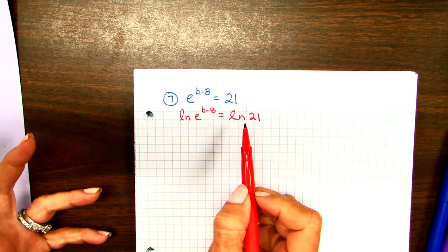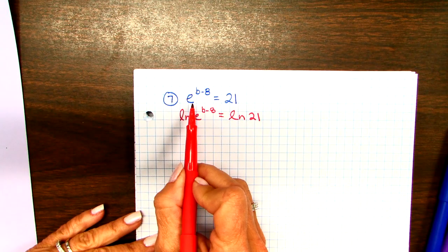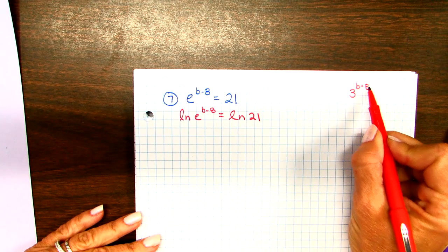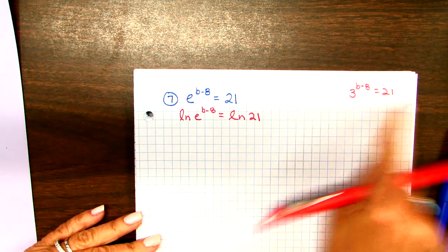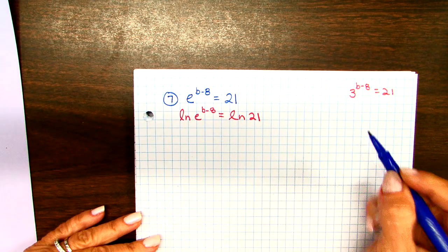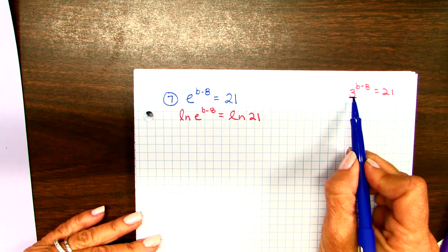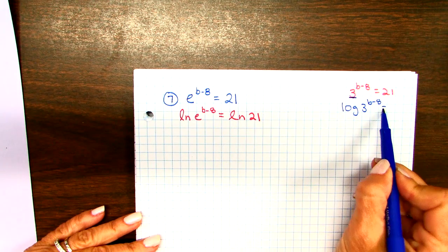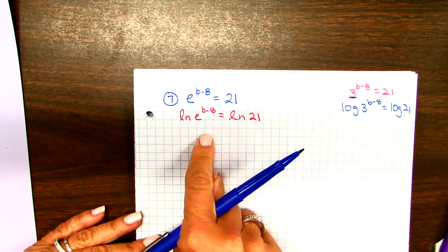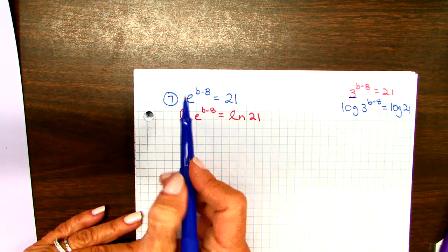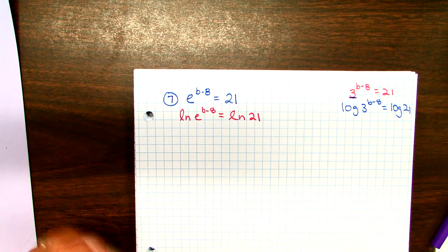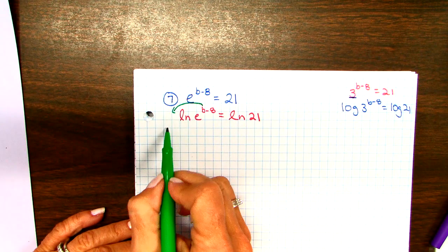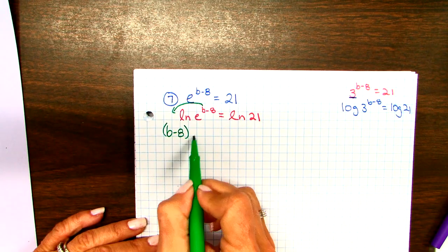So I give both sides a natural log. And why did I use natural log instead of log? Simply because this was an E. You would have seen, I just want to make a point. You would have seen a problem just like this last test. You would have said, is there any cleanup to do? No, I'm ready to take the log of both sides. Since this is a number, any number, you would have given both sides a log instead of a natural log. That's the only difference in these problems. So that was what we were doing for. Because it's an E, it's a natural log. Because it's a natural log, I'm allowed to use the properties of logs and bring the B minus 8 down in front.